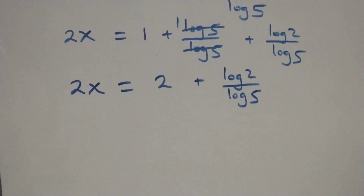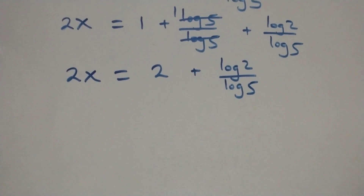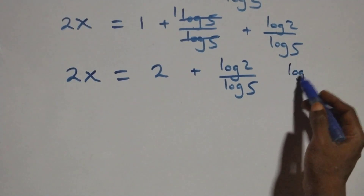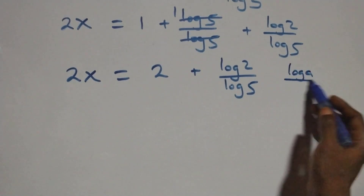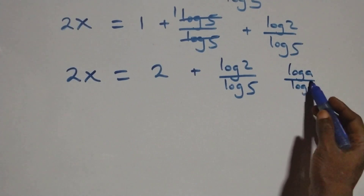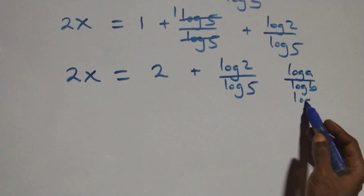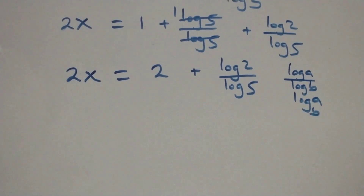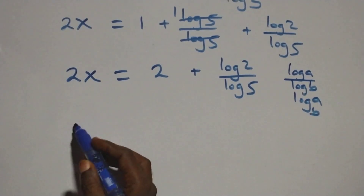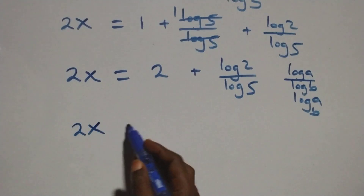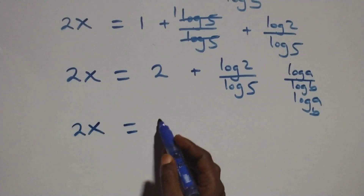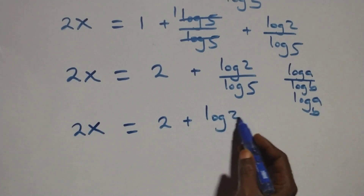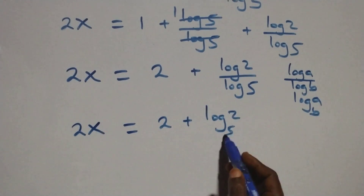We now apply the change of base formula: log a over log b is the same thing as log a to base b. So here we have 2x equals to 2 plus log 2 base 5.